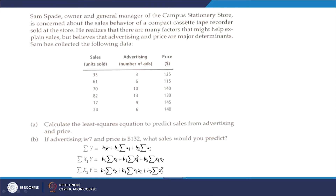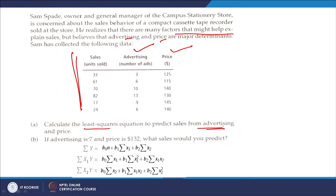Let us look at one more example on multiple regression. Sam Spad, owner and general manager of a campus stationery store, is concerned about the sales behavior of compact cassette tape recorders sold at the store. He believes that advertising and price are the most important factors. Data collected includes number of units sold, advertising expenditure, and price. He wants to know the relationship between sales and these two independent variables, and wants to calculate the least squares equation to predict sales from advertising and price.